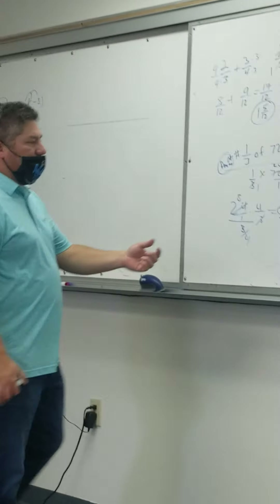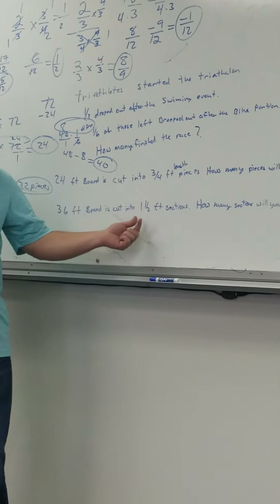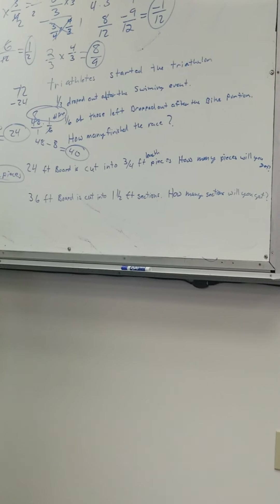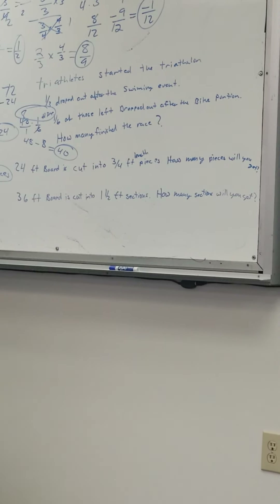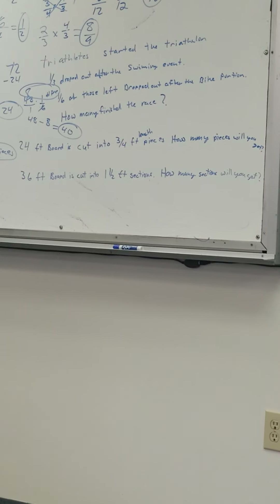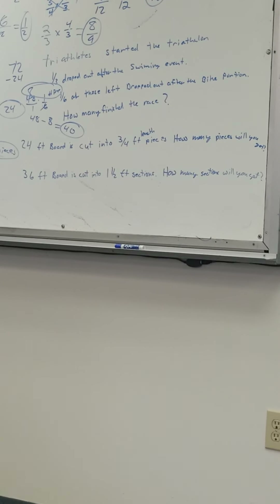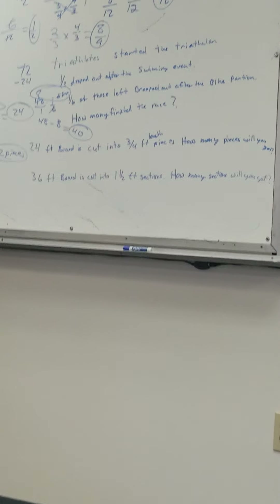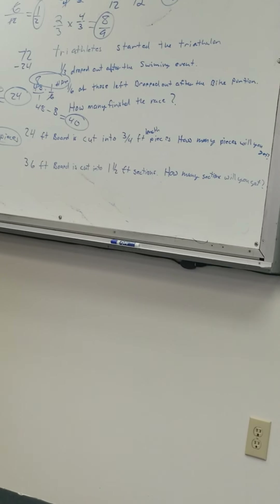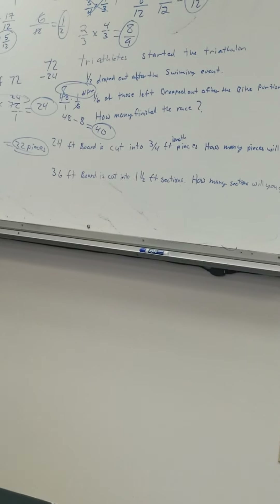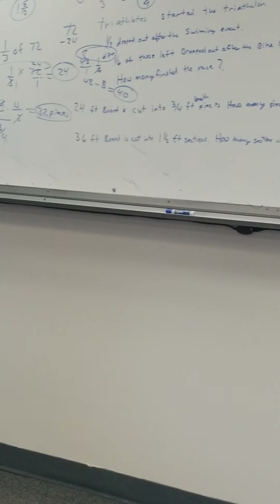How about the next one? We've got a 36-foot board and we're cutting it into one-and-a-half foot pieces. Should I get more or less than 36 pieces? Less — because it's more than one foot per piece. So I expect this one to be less. However, the math is the same: I take 36 and divide it into one and a half.